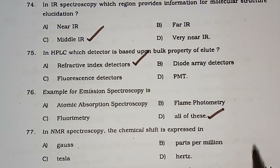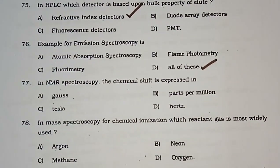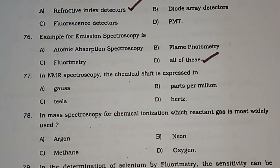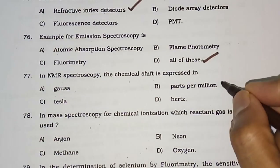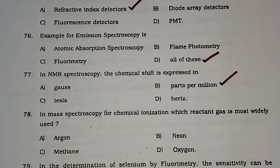Question number 77: In NMR spectroscopy, the chemical shift is expressed in — gauss, parts per million (PPM), Tesla, or hertz. PPM is the correct answer.